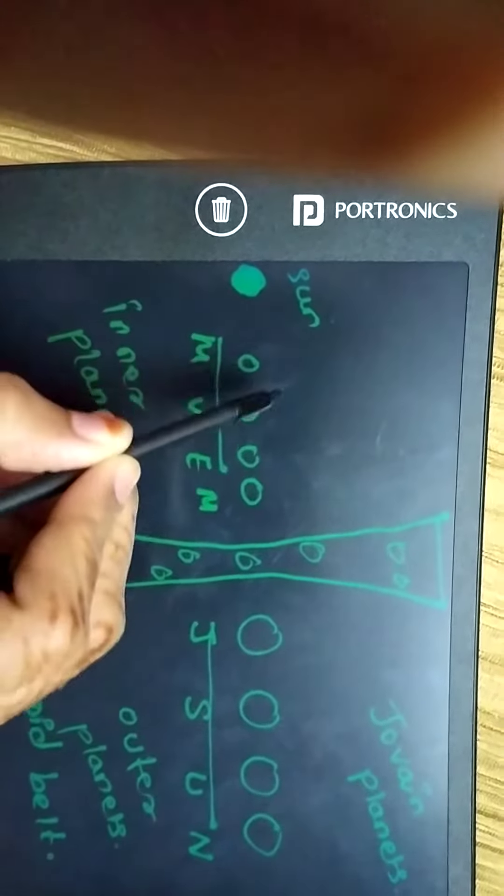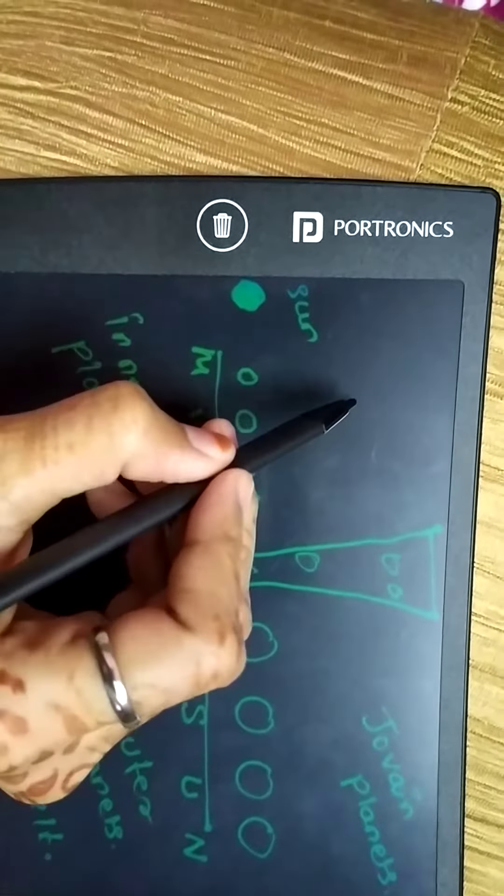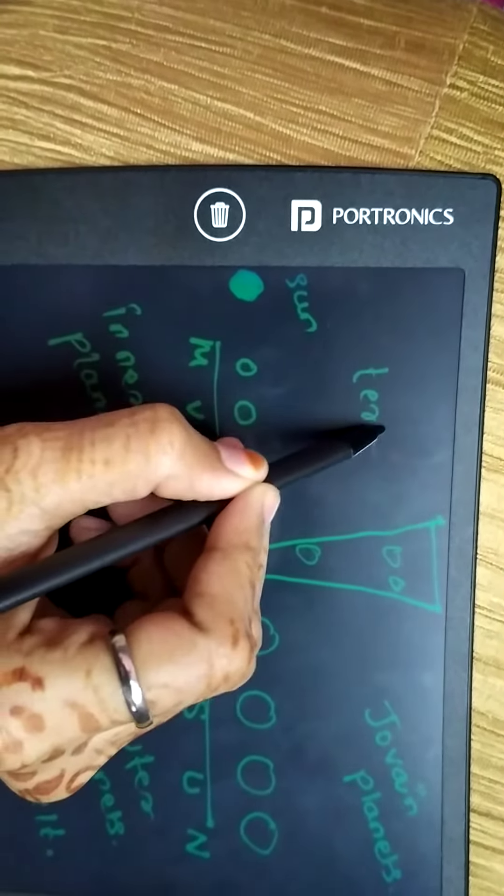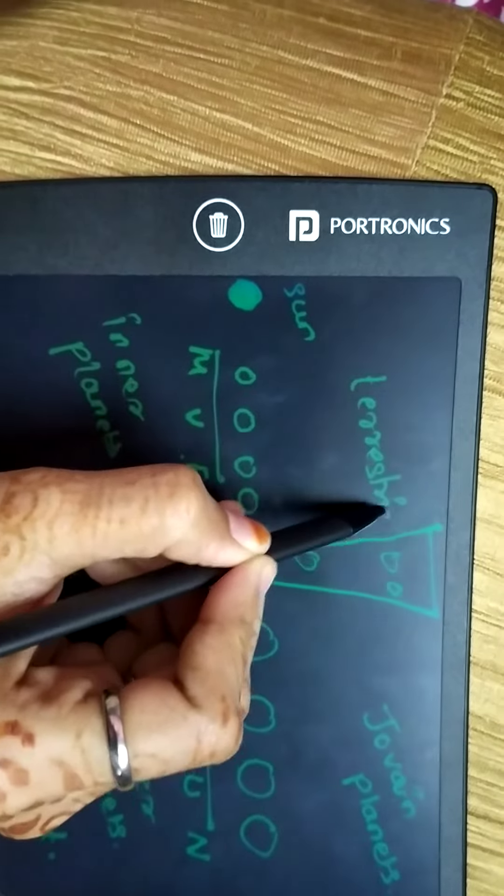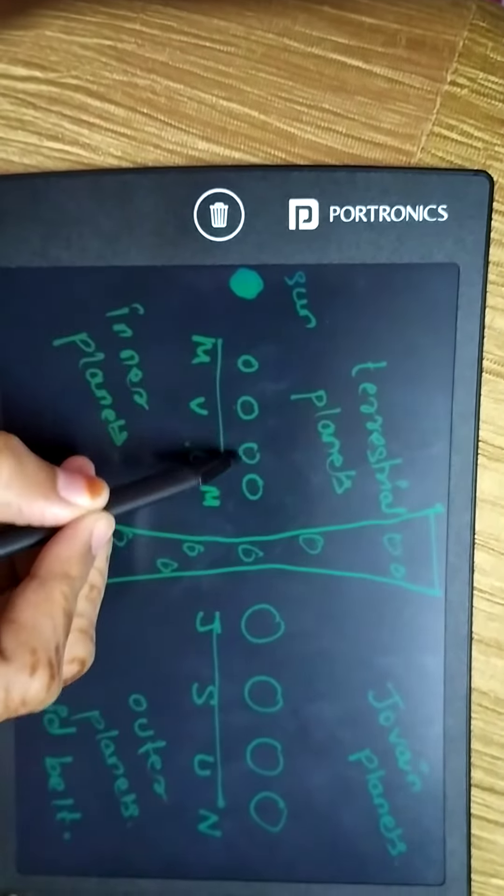These four planets - Mercury, Venus, Earth, and Mars - are terrestrial planets because in these planets we find rock and land. That is why they are known as terrestrial planets.